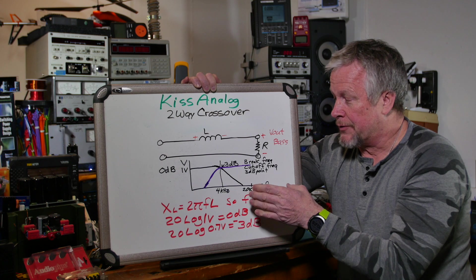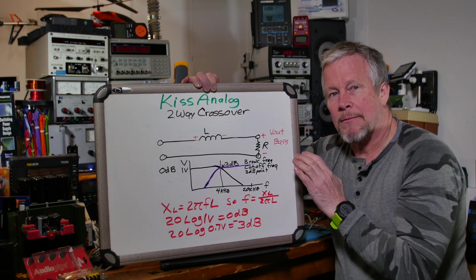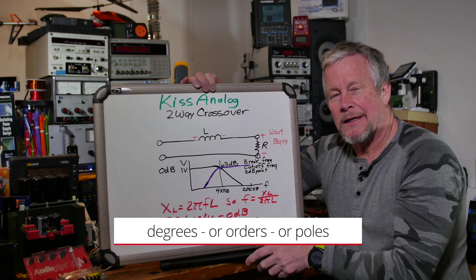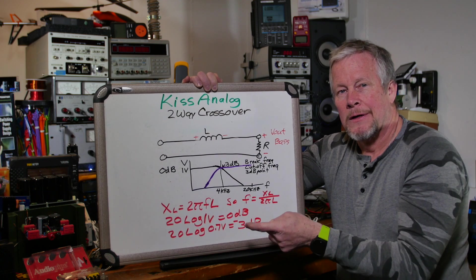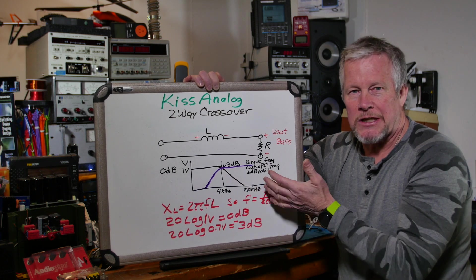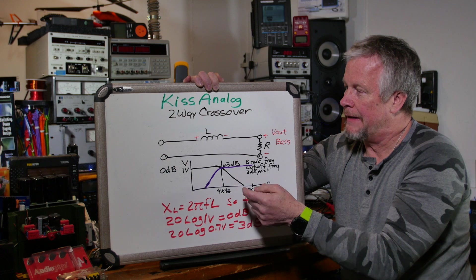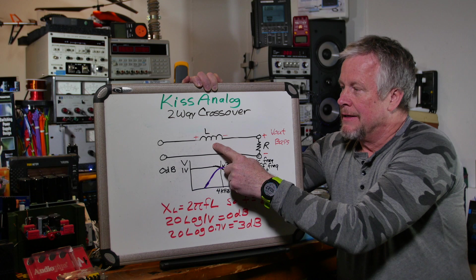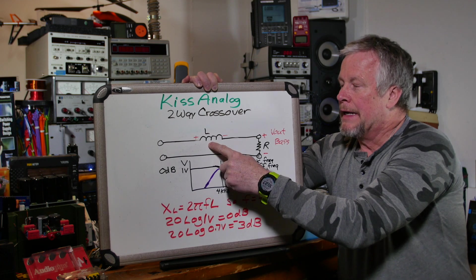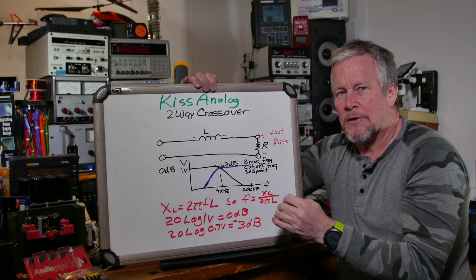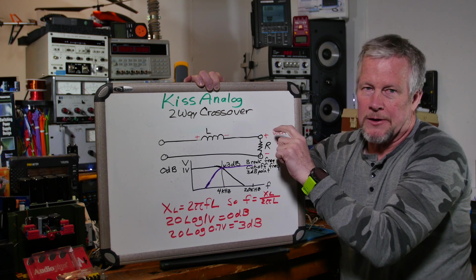To get a more ideal response that drops straight down, you add more degrees — meaning for every order of your filter you have one X, or one reactive element. This filter has only one X, so it's a single-order or single-degree filter. If I had a capacitor in here it'd be a second order filter. The X stands for reactance. R is resistance, but inductors and capacitors also impede current flow and they're called X — reactance. They react differently to different frequencies, whereas a resistor is 4 ohms at all frequencies.